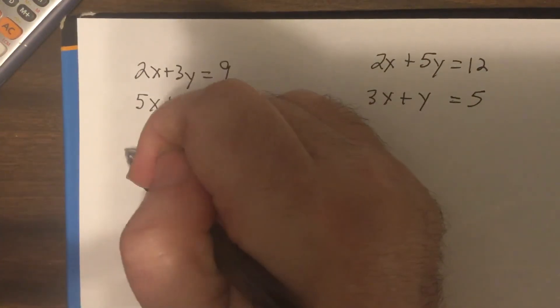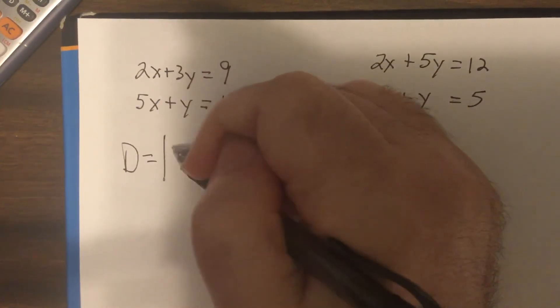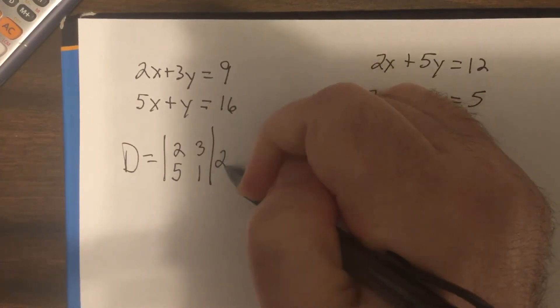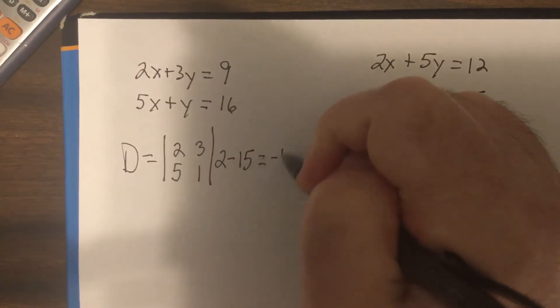So first I'm going to find the big D. So that would be 2, 5, 3, 1.